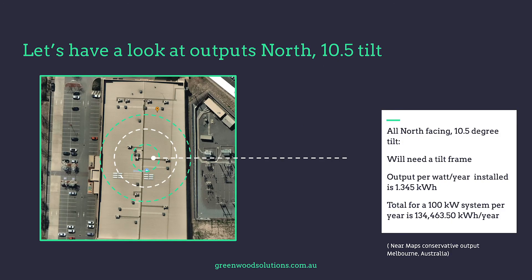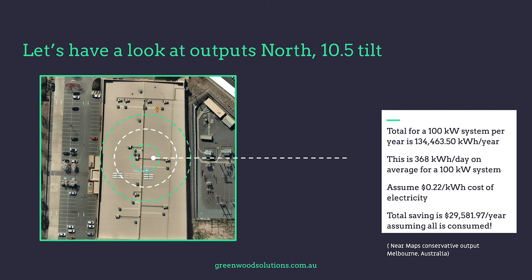Let's look at outputs. For a north-facing array at a 10.5 degree tilt, the output per watt per year installed is 1.345 kilowatt hours. Total for a 100 kilowatt system per year is 134,463 kilowatt hours. This comes from NEMAPS and is a conservative output for Melbourne, Australia. Assuming a cost of electricity of 22 cents per kilowatt hour, the total savings per year is $29,581, assuming all is consumed — though this is not the reality.